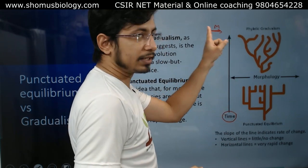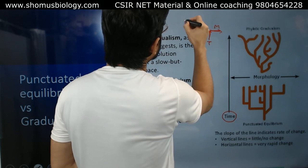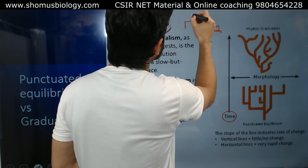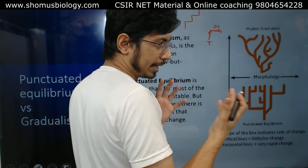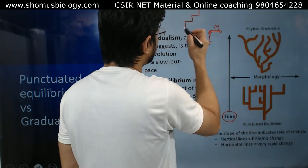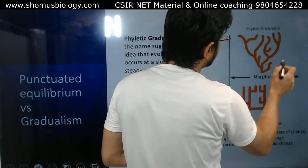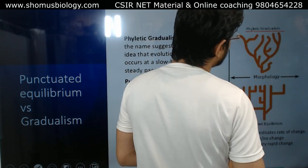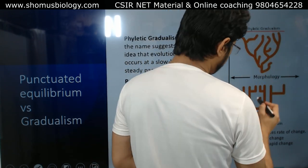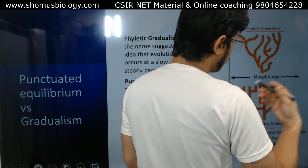So vertical line is time, horizontal line is morphology. Here you can see that this is phyletic gradualism and this is punctuated equilibrium.